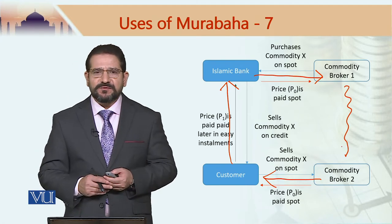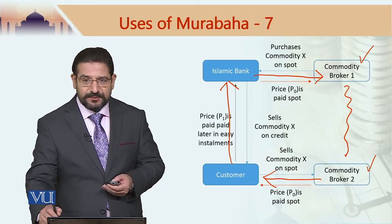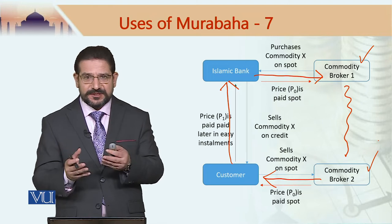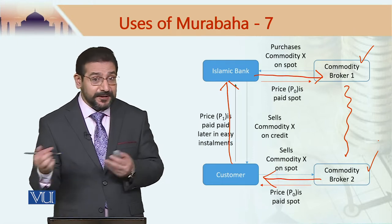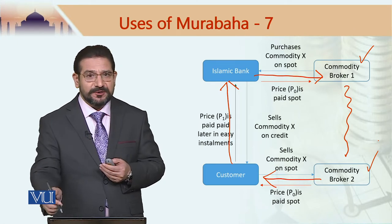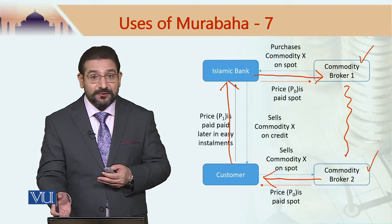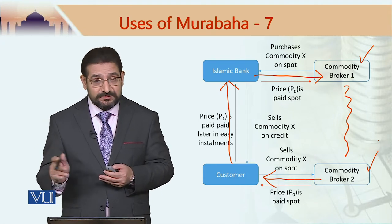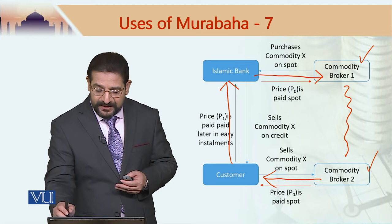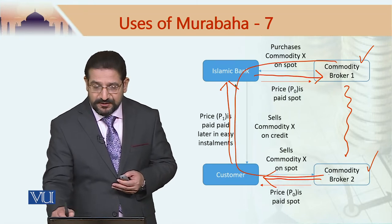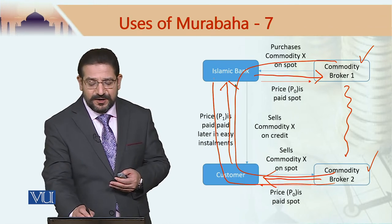Something happens in between, which we call undisclosed activity, because commodity broker 1 and commodity broker 2 are in the same market — listed on the same exchange — and hence there is an undisclosed possibility that commodity broker 1 actually gets the commodity from broker 2 to start with. But we do not go into those details. What I am trying to say is that the commodity movement takes place in one direction and the price flows from broker to bank to customer and back.